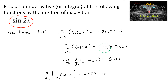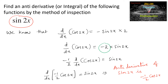This implies that the derivative of a function is sine 2x. So we can say that the antiderivative of sine 2x is minus 1 by 2 cos 2x. So minus 1 by 2 cos 2x is the answer.